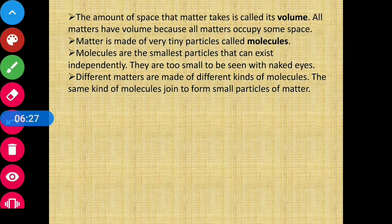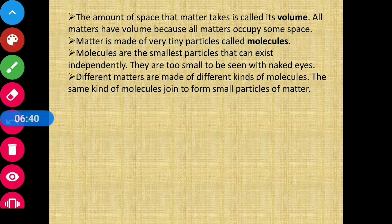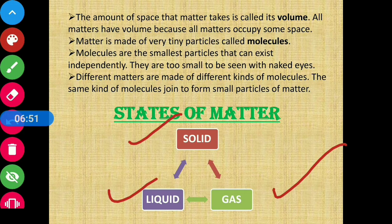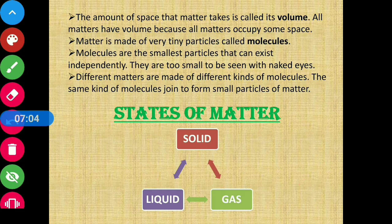We have talked about matter — matter can be invisible or visible, and matter is made up of molecules. Now let us see the states of matter. Matter has three states: solid, liquid, and gas. Later we will also see that these three states are inter-convertible — they can be converted into one another. But first, let us see some features of solid, liquid, and gas.